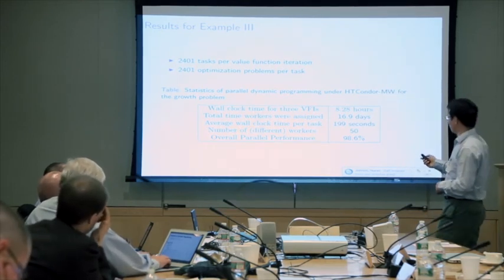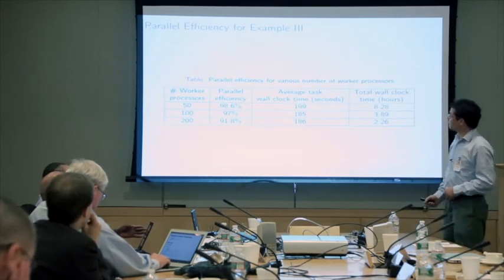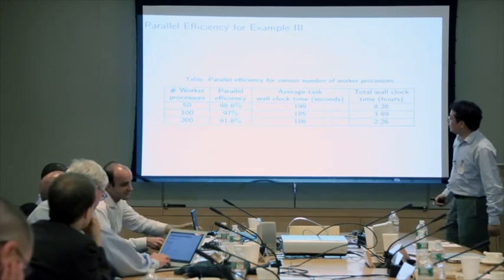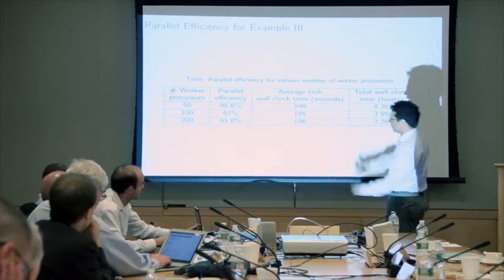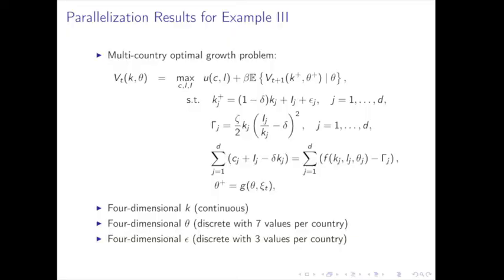We also tried 100 and 200 processes, achieving about 92% parallel efficiency. The computation time drops from 8 hours to just over 2 hours with 200 workers.